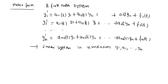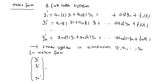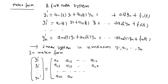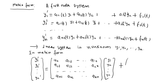In matrix form, the left-hand side is a column vector [y1', y2', ..., yn']. The coefficient matrix A has entries aij(t). Multiplying A by the column vector y = [y1, y2, ..., yn] and adding the non-homogeneous column vector f = [f1, f2, ..., fn] gives the compact form: y' = A(t)*y + f(t).